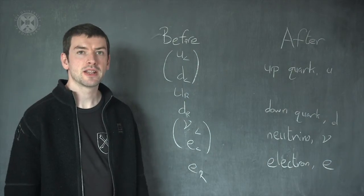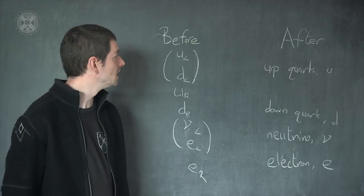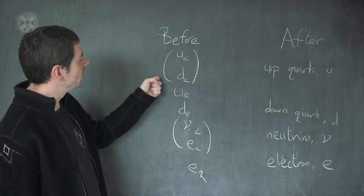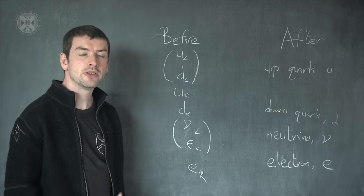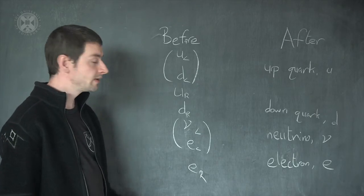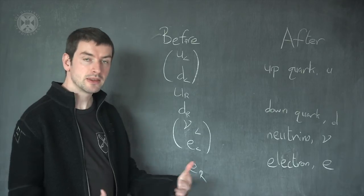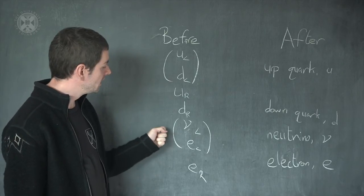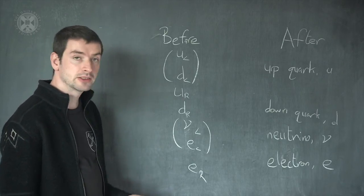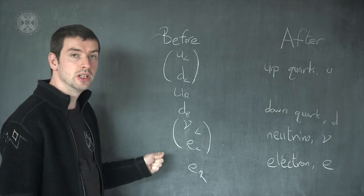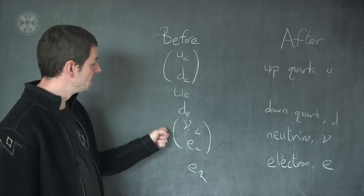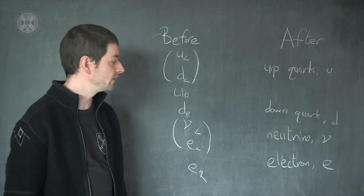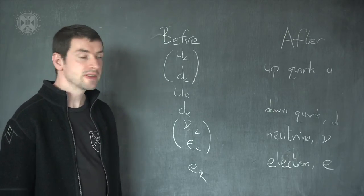Let's look at how the fermions in the standard model behave before and after symmetry breaking. Before symmetry breaking, there are left-handed ups and left-handed downs that form a pair and interact with SU(2). In addition, there is a right-handed up and a right-handed down, which don't interact with SU(2). In addition to the quarks, there is a leptonic sector, comprised of a right-handed electron and another pair: the left-handed neutrino and the left-handed electron. This left-handed pair interacts with SU(2), while the right-handed electron does not.